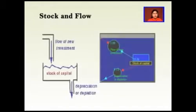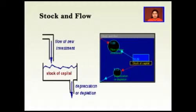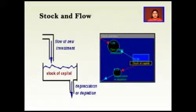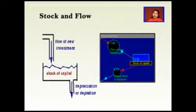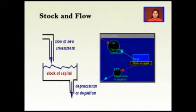The next concept is stock and flow. The diagrammatic presentation is showing the flow of investment, the stock of capital, and depreciation or depletion. The flow of investment means new things are coming in. The stock of capital is the accumulated stock we already have. We may add new investment to the stock of capital, but the stock of capital either depreciates or depletes, so the amount will come down.